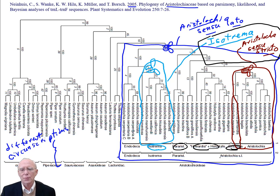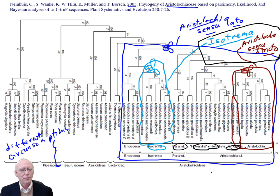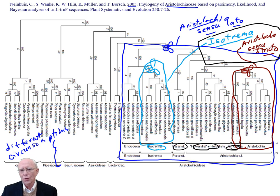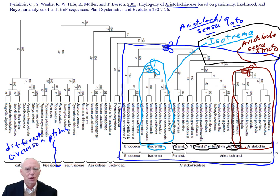These are all then separated off into other genera — or they can be separated off into other genera. Different authors have just broken up this phylogeny in different ways and taken different types of circumscriptions as being correct in their treatments.